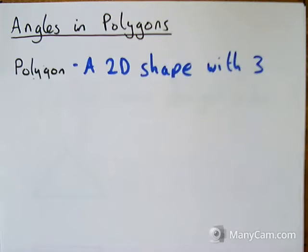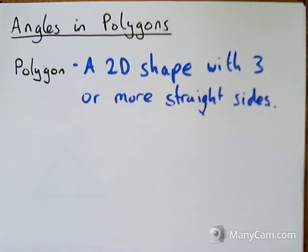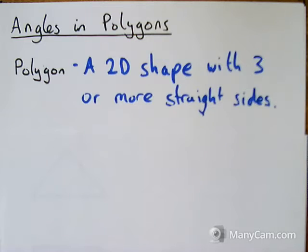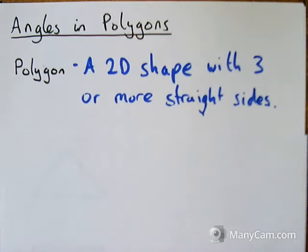A polygon is a 2D shape with three or more straight sides. So it goes all the way from triangles, quadrilaterals, pentagons, hexagons, all the way up to however many sides you want in a polygon.